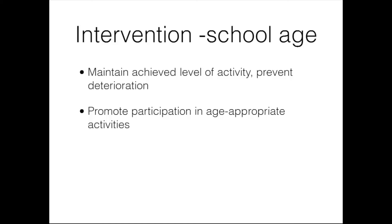Moving into school age, as we discussed with the GMFCS, most children reach their optimal gross motor function at early ages. By school age, for the most part, they've achieved their optimal level of gross motor function, though improvement is certainly possible for some. At this age, PT really focuses on maintenance, age-appropriate participation, and monitoring challenges that may occur with adolescents, such as growth and puberty, pain, loss of muscle extensibility, overuse injuries, and a more demanding lifestyle.